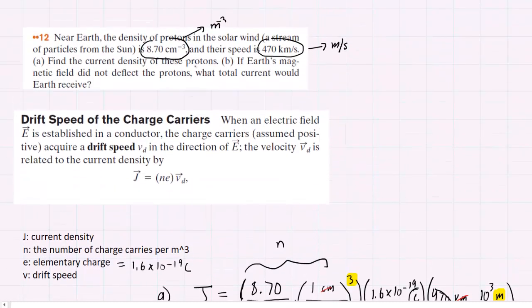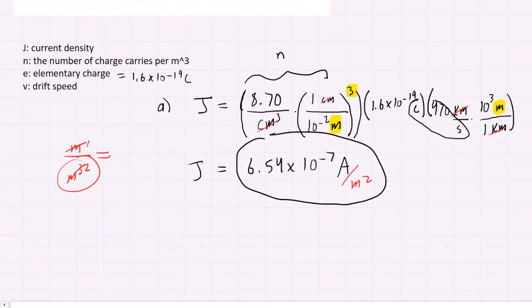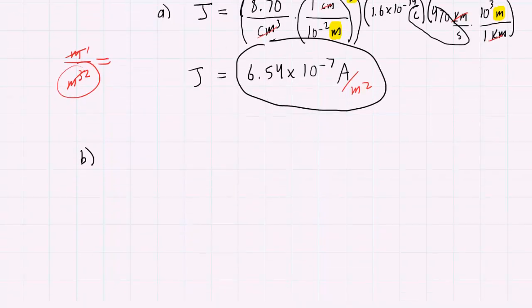We go up to part B, and it asks us, what is the total current that Earth would receive? That's kind of an interesting question.